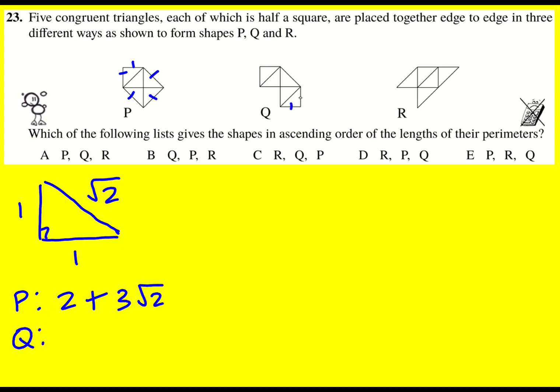Q, I've got one, two, three, four, five, six, and then just one lot of root two. And then R, I've got one, two, three, four, very easy to miss that I think, and then one, two, three lots of root two.